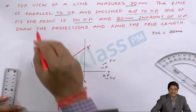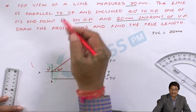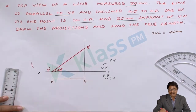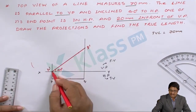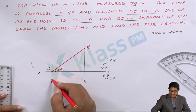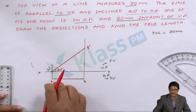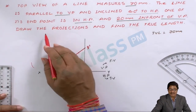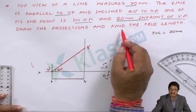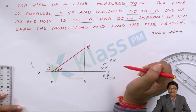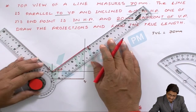Now check all the conditions. Top view of the line measures 70 mm — drawn as 70 mm. The line is parallel to VP — the VP details are in the top view, drawn parallel. Inclined 40 degrees — drawn at 40 degrees in the front view. One endpoint is in HP — P' is on the XY line. 20 mm in front of VP — top view drawn 20 mm from XY. All conditions are satisfied. Now answer the remaining question: draw the projections — done, both front view and top view are drawn. Find the true length — the line length is not known; the given length is the top view length. You have to measure the front view length P'Q' to get the true length.